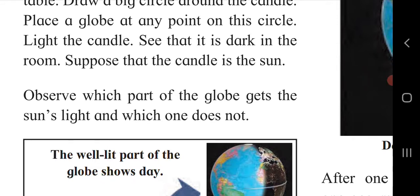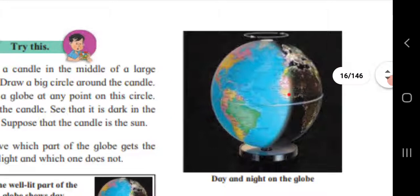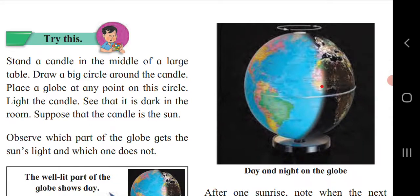When we draw a big circle on paper and place it on the table, we keep a lighted candle at the center. We place a globe at any point on the circle and darken the room. When the room is dark, the light falls on the side of the globe facing the candle — that side is well lit. The other part, away from the candle, is in darkness. The lit side represents daytime and the dark side represents nighttime.